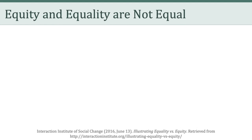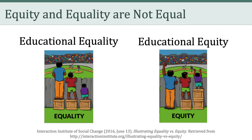Now it's time to talk about equity and equality, and the idea that equity and equality are not actually equal. Let's make a distinction between educational equality and educational equity. Equality, as shown on the left, aims to ensure that everyone gets the same things in order to enjoy full, healthy lives. Educational equity, in contrast, involves trying to understand and give people what they need to enjoy full, healthy lives. On the left, everybody is getting the same resources — the educational resources are equal. However, on the right, the educational resources are distributed differentially based on the needs of the individuals.